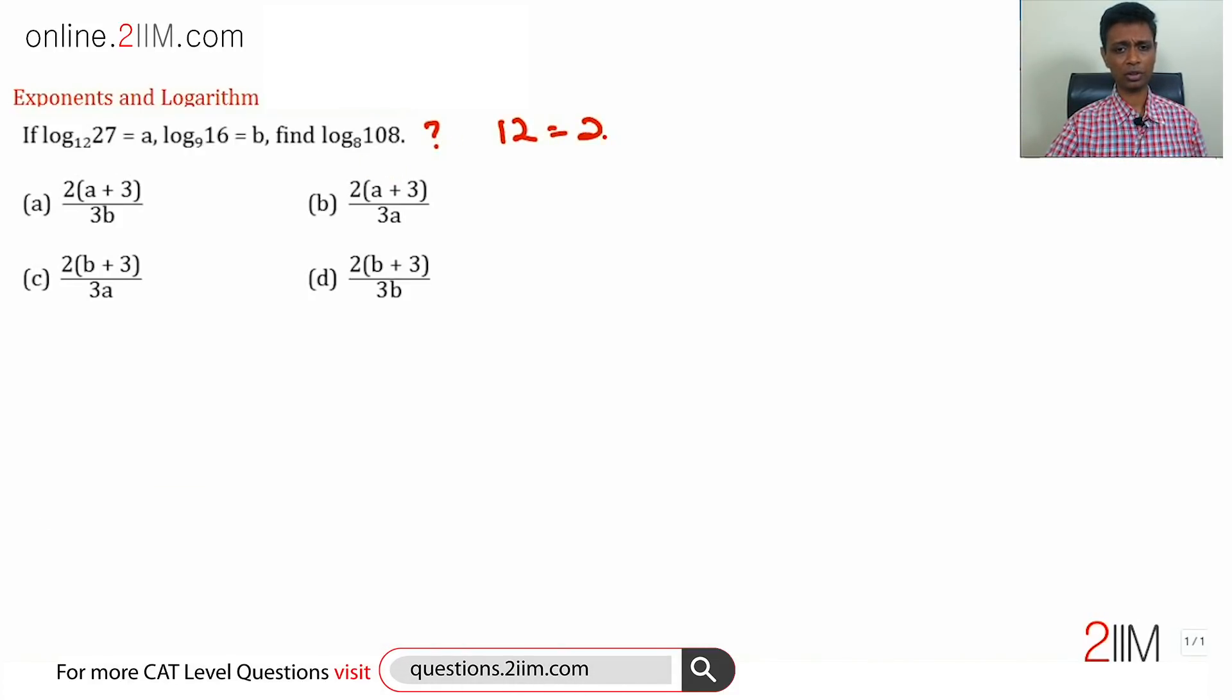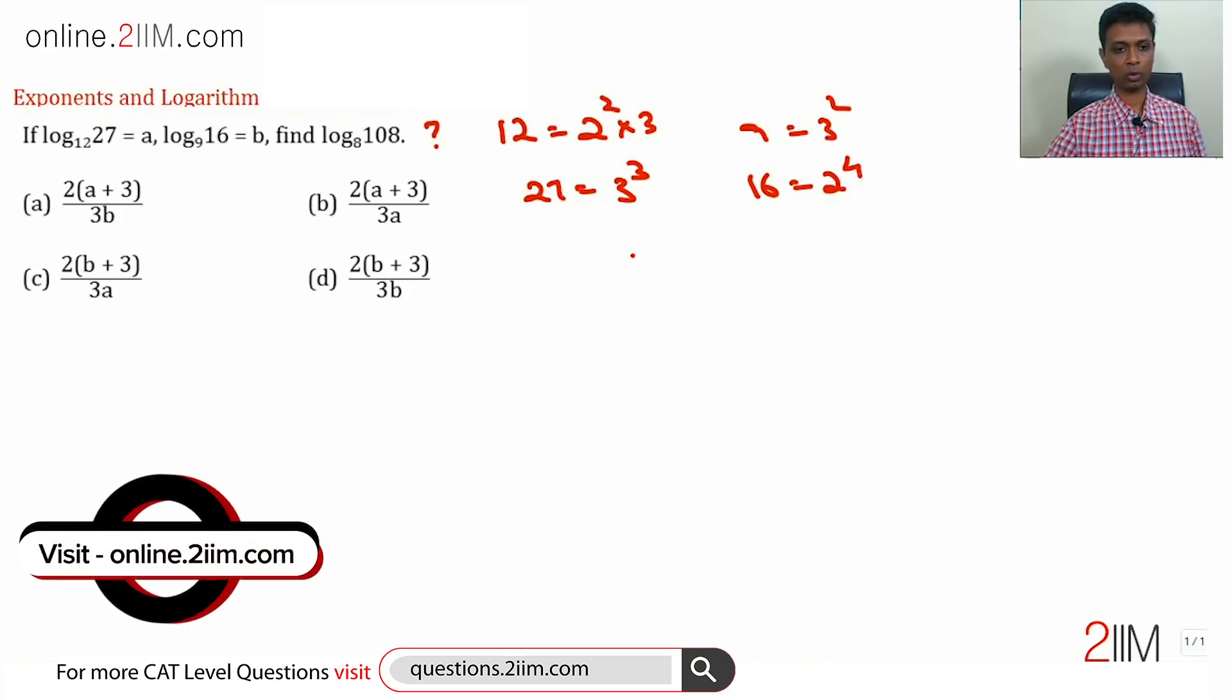Notice 12 is 2 squared times 3, 27 is 3 cubed, 9 is 3 squared, 16 is 2 to the power 4, 8 is 2 cubed.